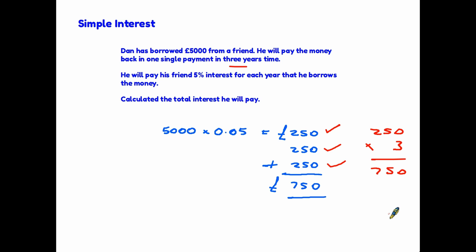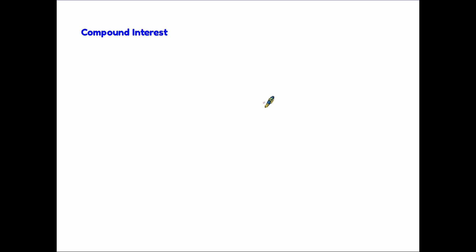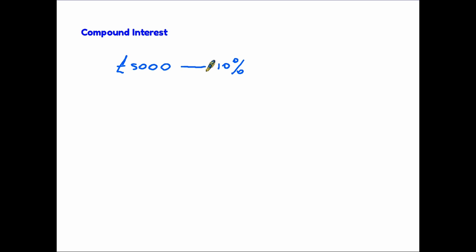So let's move on to the more complicated compound interest. I'm going to start with a very simple situation just so we can see how compound interest works. Let's imagine you put five thousand pounds into a bank account and the bank is going to pay you ten percent a year. You put the money in and keep it in for a year. At the end of that year they have to pay you ten percent — so ten percent of five thousand is five hundred pounds.